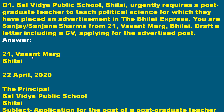First write your sender's address — 21 Vasant Marg, Bilai — in two or three lines. Then leave one line gap and write the current date directly, without writing the word 'DATE.' This is a common mistake students make. Then one line gap, then write 'The Principal,' because you are applying to a school. Then Balvidya Public School, Bilai. Then one line gap, and write the subject: 'Application for the post of Postgraduate Political Science Teacher.'